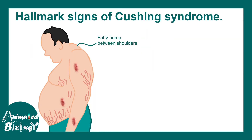A patient with Cushing syndrome presents with a fatty hump behind the back of the neck, a round face clinically known as moon facies, easy bruising, and pink stretch marks known as purple striae.